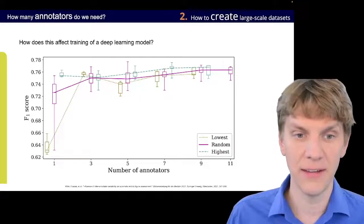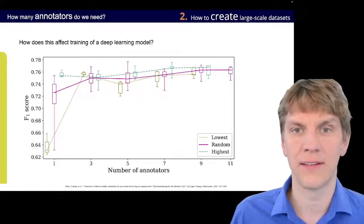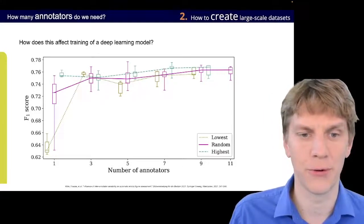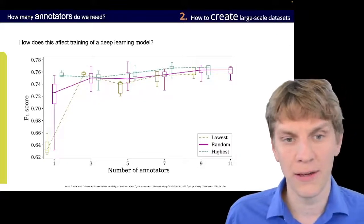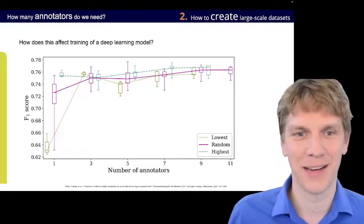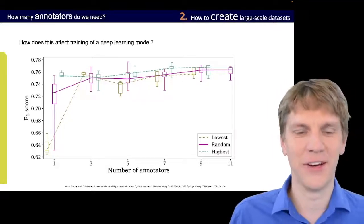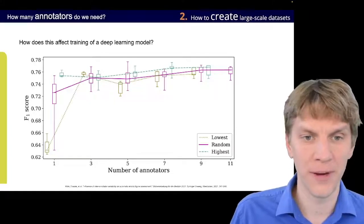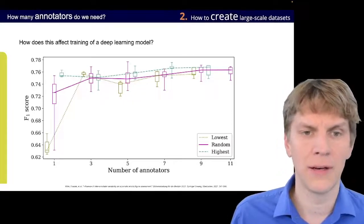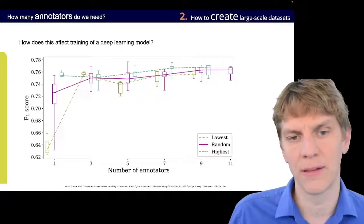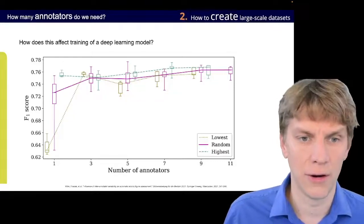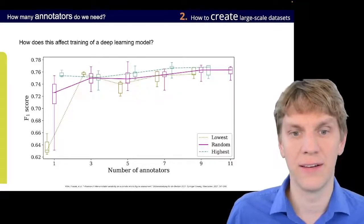And we can see that if we only have one annotator, of course, that the lower agreement to the ground truth significantly impacts the F1 score on the model. And once we enhance that number to, well, 3, because 2 doesn't make sense for a majority vote in a kind of binary case, right? So, once we increase that number to 3, then we already see that the performance goes up quite significantly. And we have no such strong effects following this thereafter. So, 5 and 7 and 9 does not improve the stability a lot of our trained deep learning model.